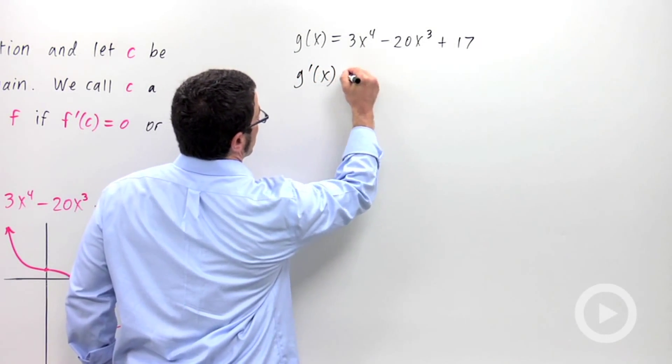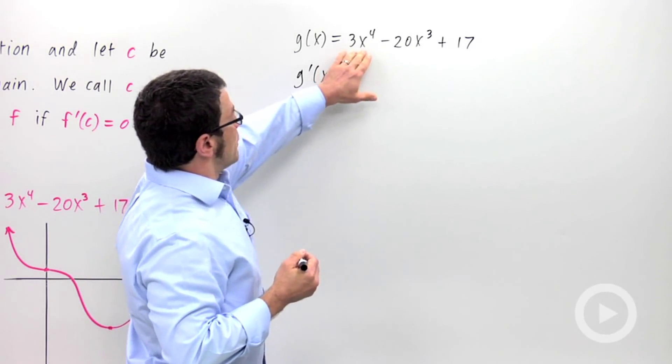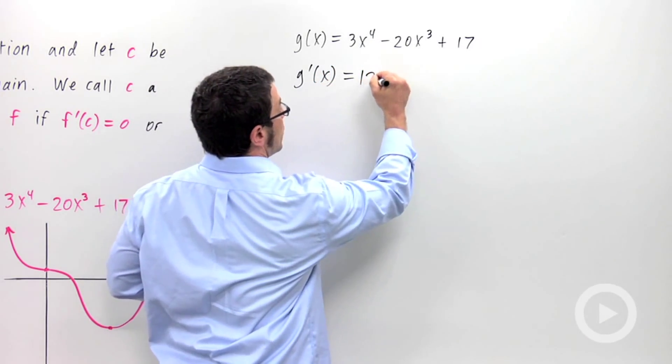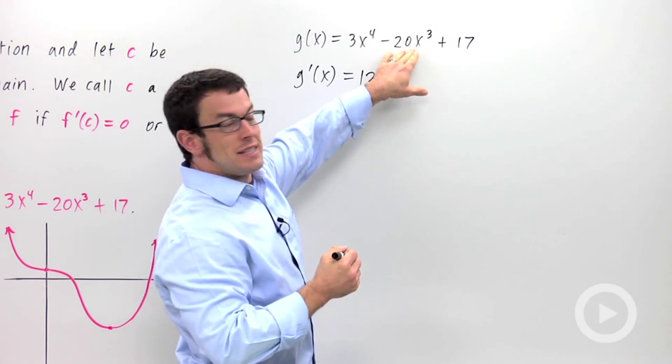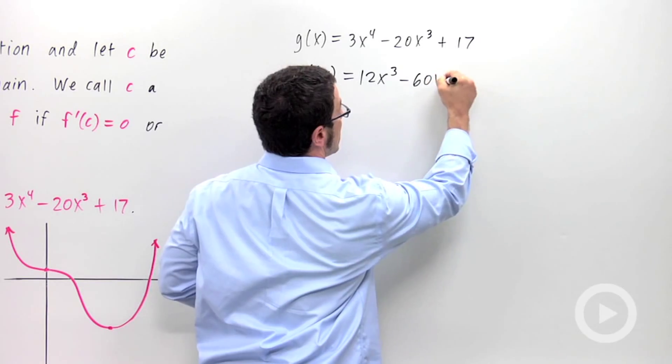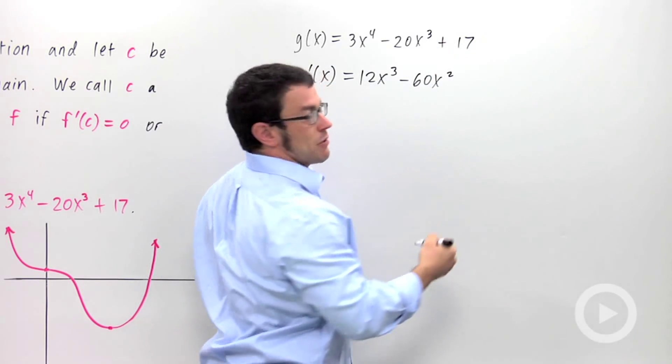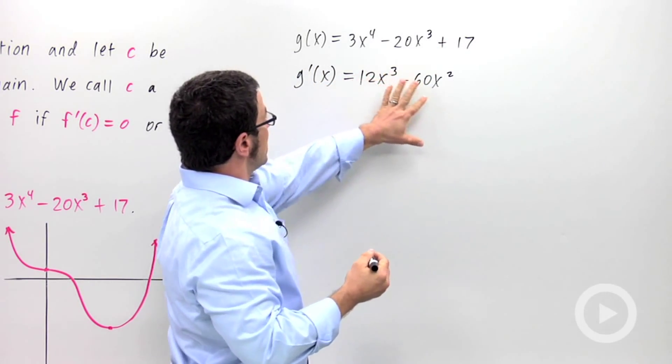So it's a polynomial, really easy to differentiate. The derivative of 3x to the fourth is 12x cubed. The derivative of 20x cubed is 60x squared. And the derivative of 17 is 0. So this is my derivative, nice and easy.